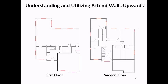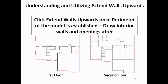Looking at an example we've already discussed — for this 2-story structure, I would recommend clicking Extend Walls Upwards right after you've established the perimeter of the model. Smaller structures don't require a lot of work to go in and adjust all the interior walls and openings after you've clicked Extend Walls Upwards.